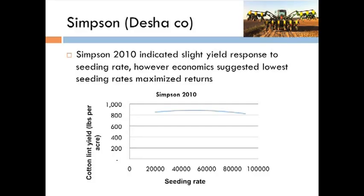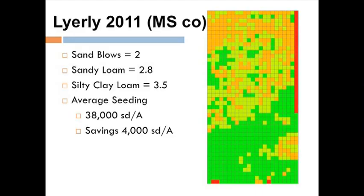He told us if we could do that on his whole farm, it would be about $160,000 in savings — though not every field will represent that. We've done this at several locations. Another location in southeast Arkansas on a silt loam type — a little lighter than silt loam — in 2010 we got a significant yield increase on seeding rate right around 45,000. But when we look at profitability above seeding costs, the lowest rate over those years was the best. In Mississippi County on another field with sand blows, we saved about 4,000 seed per acre. It's not just about seed savings — we want to maintain yield, and we're maintaining profitability while saving seed cost.